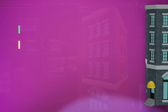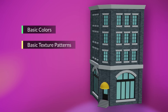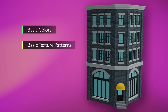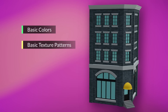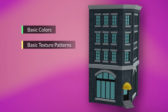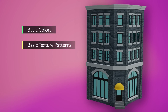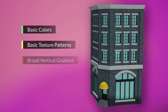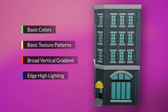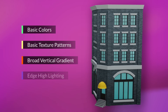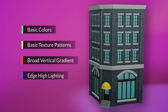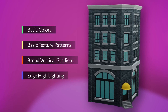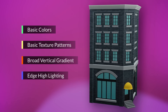We have basic colors and basic texture patterns, but this is not really enough to achieve an appealing result. We want to introduce a couple more staple characteristics: an overlaid broad gradient darker at the bottom and lighter at the top, as well as highlighting on convex edges. These serve to further vary the tones of our underlying color, and the result is a much fuller, much more interesting look.